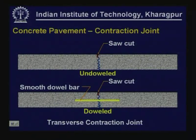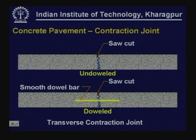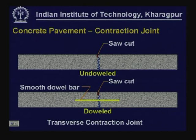Contraction joints can also be provided in the longitudinal direction depending on the requirement of load transfer and the dimension of the slab in the lateral direction. This is a typical contraction joint. The diagram in the upper portion of the sketch is a contraction joint without a dowel bar — titled as undoweled contraction joint.